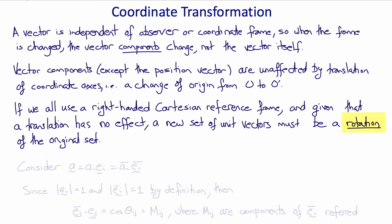Let's consider the vector a with components ai in a coordinate frame with unit vectors ei, and components ai bar in a different coordinate frame with unit vectors ei bar.